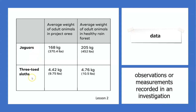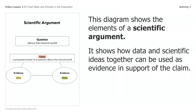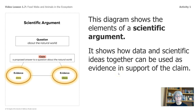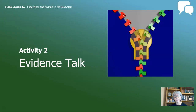Let's review this one again. This one shows the jaguars and three-toed sloths, their average weight in the project area and their average weight in the healthy rainforest. We noticed that the jaguars and the sloths in the project area did not weigh as much as the ones in the healthy rainforest. This diagram shows the elements of a scientific argument — it shows how the data and scientific ideas together can be used as evidence in support of the claim.